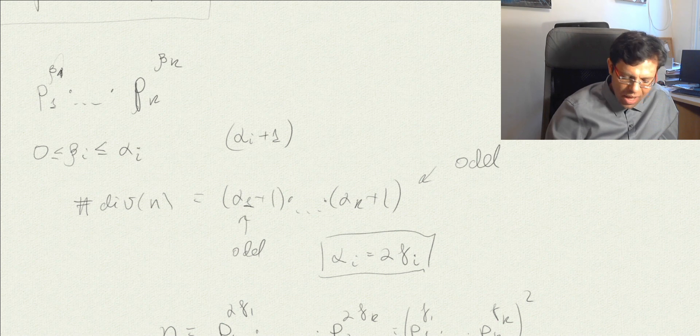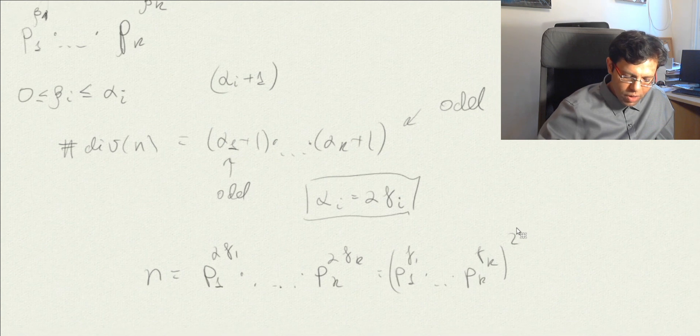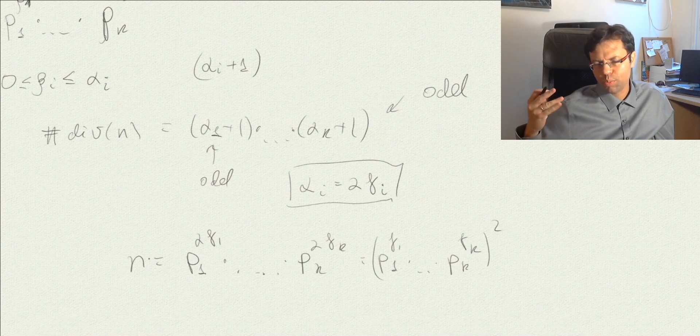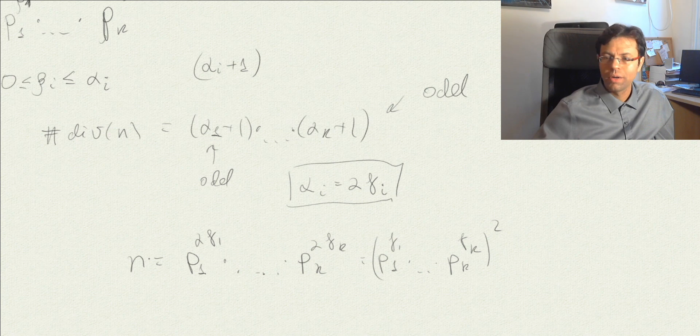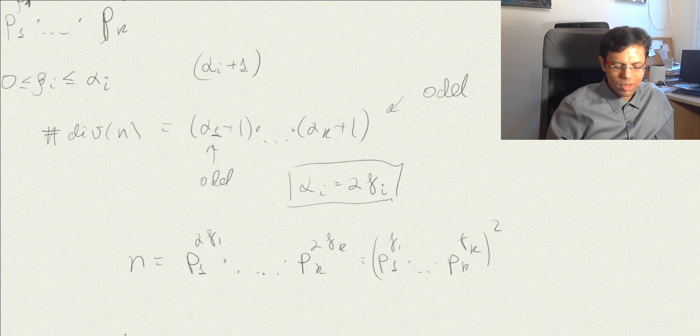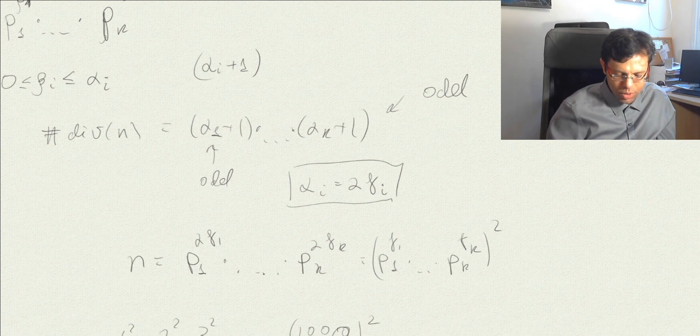Therefore, the k-th light bulb will be turned on at the end of this process if and only if k is a square. So between 1 and a million, there will be a thousand lamps that will be turned on. This is 1 squared, 2 squared, 3 squared, et cetera, up to 1,000 squared which is a million. The million lamp will also be turned on because it's a square.